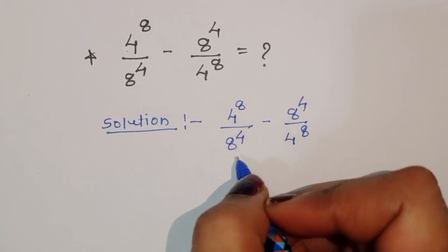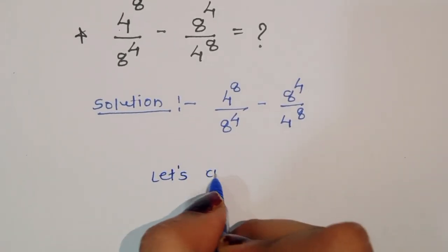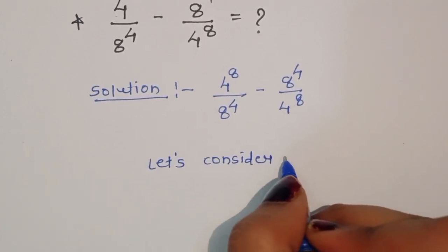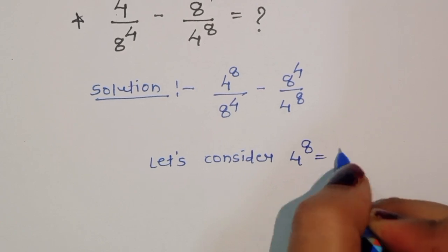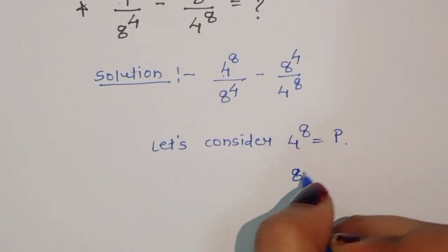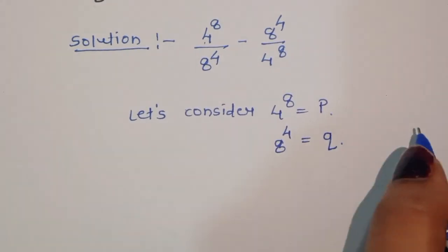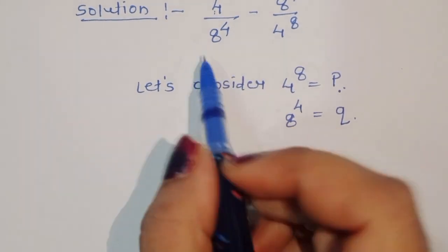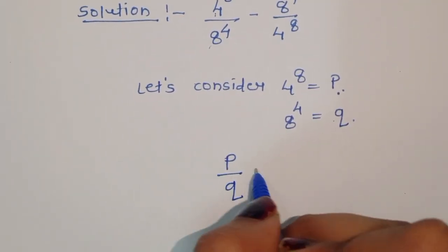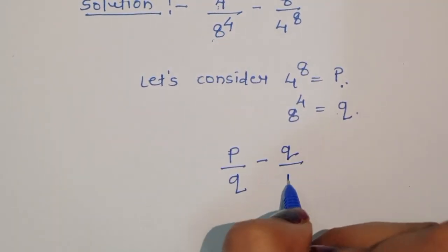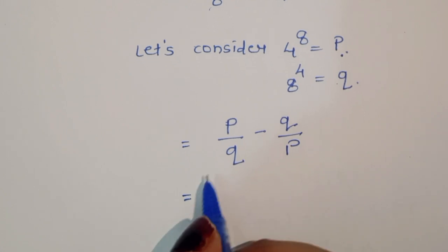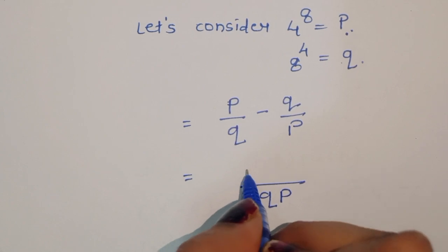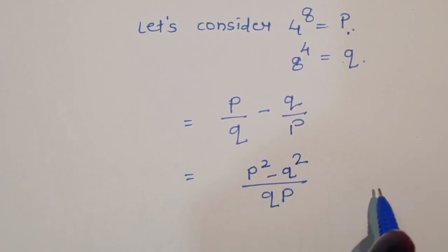We can consider a substitution here. Let 4 power 8 equal P and 8 power 4 equal Q. Now, 4 power 8 is P and 8 power 4 is Q, so we can write P upon Q minus Q upon P. Taking LCM, we get P squared minus Q squared over QP.